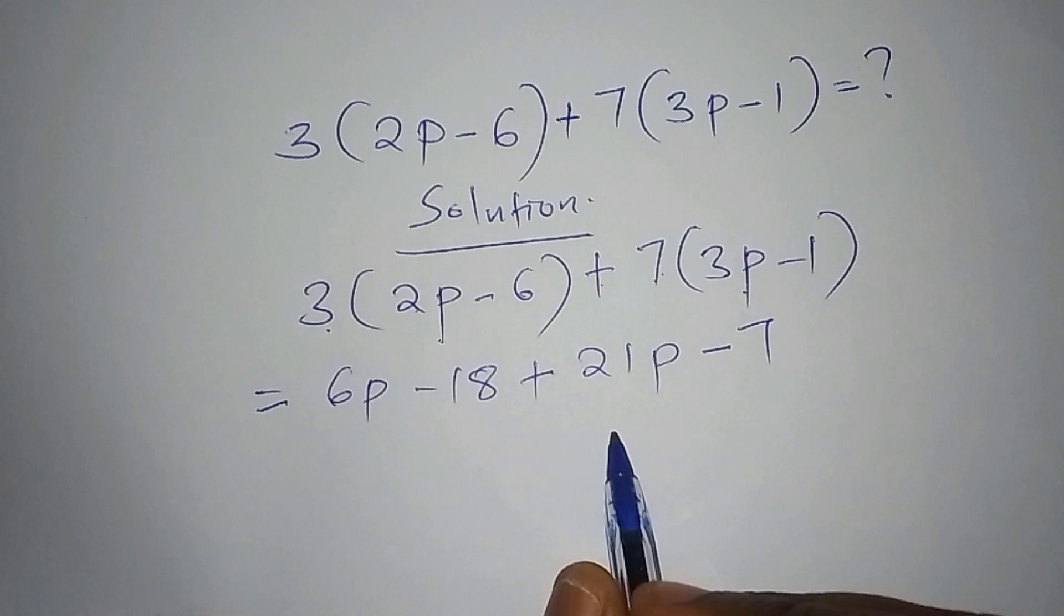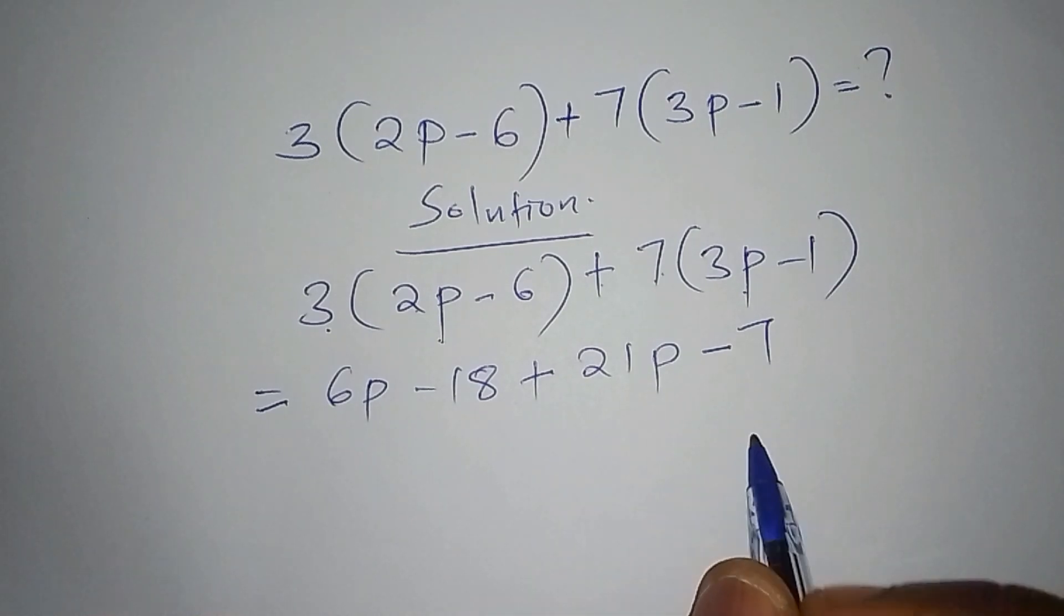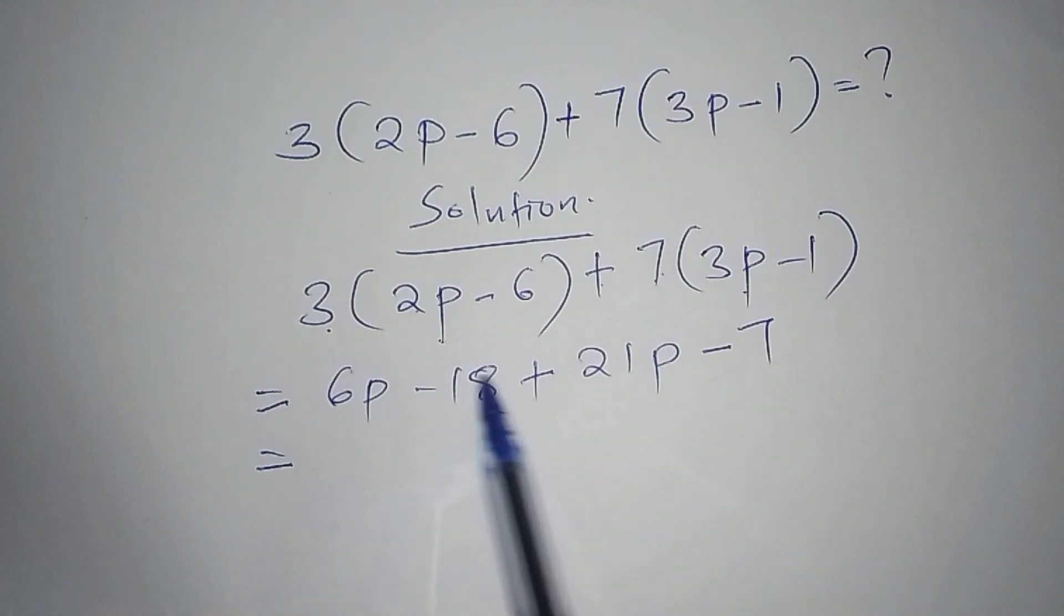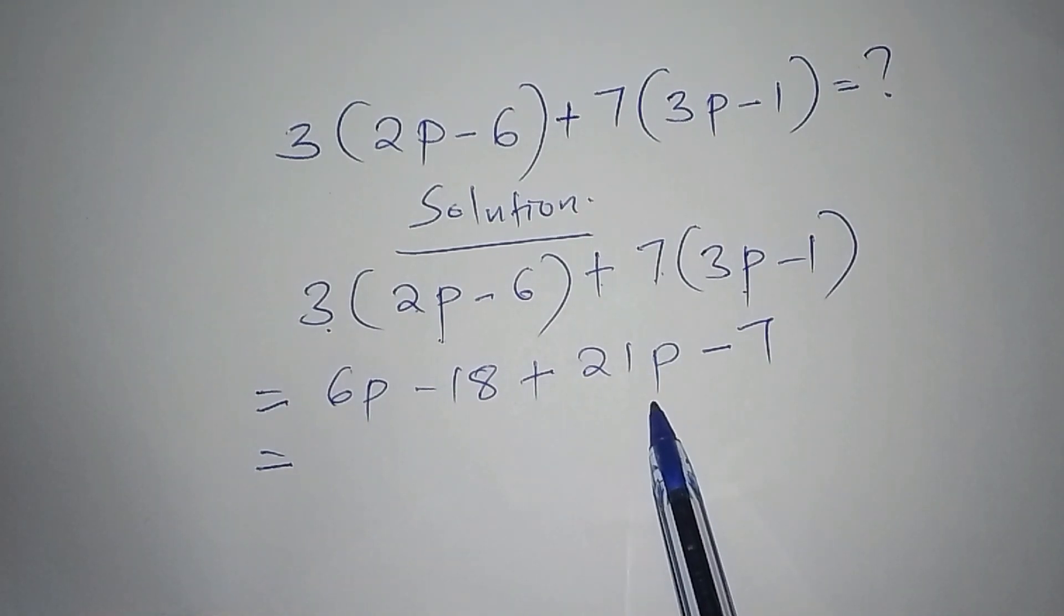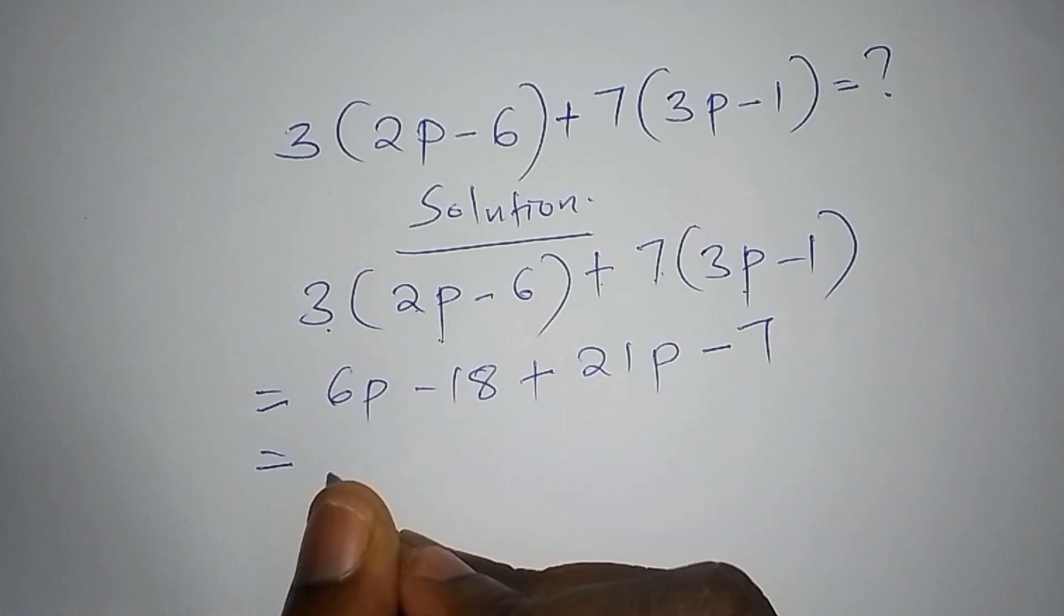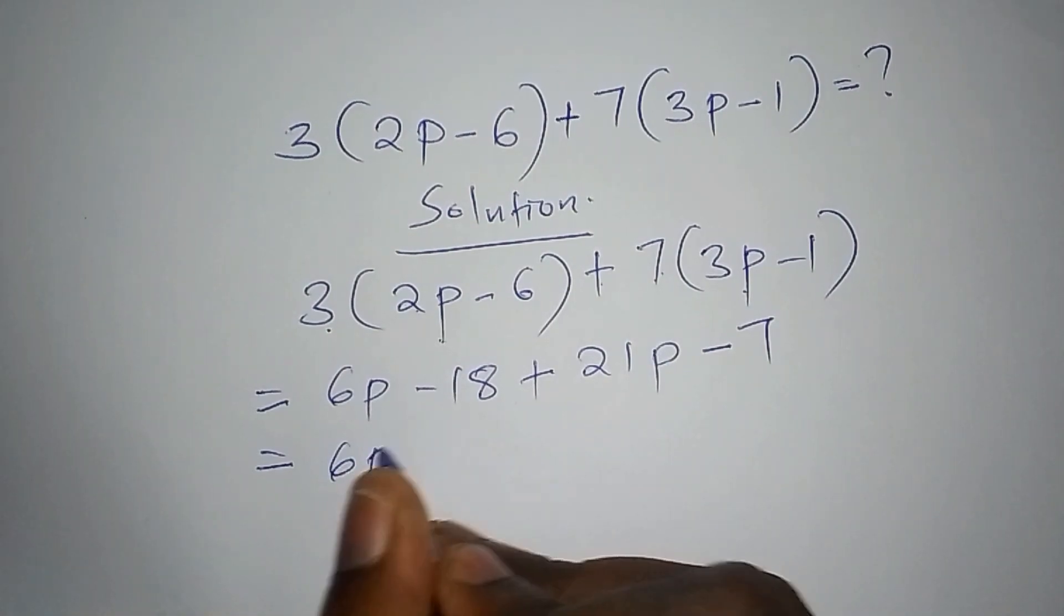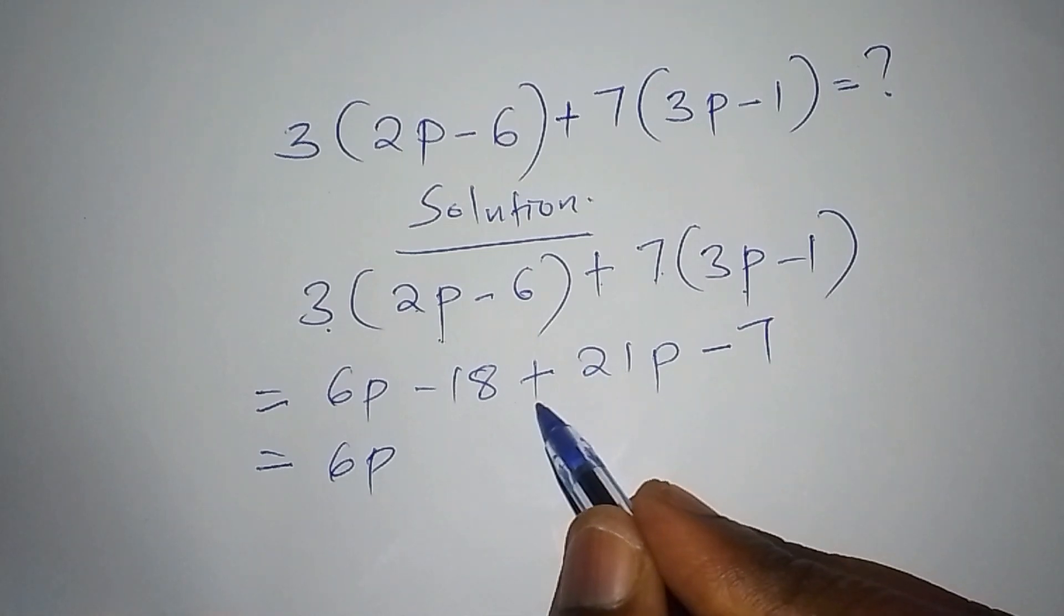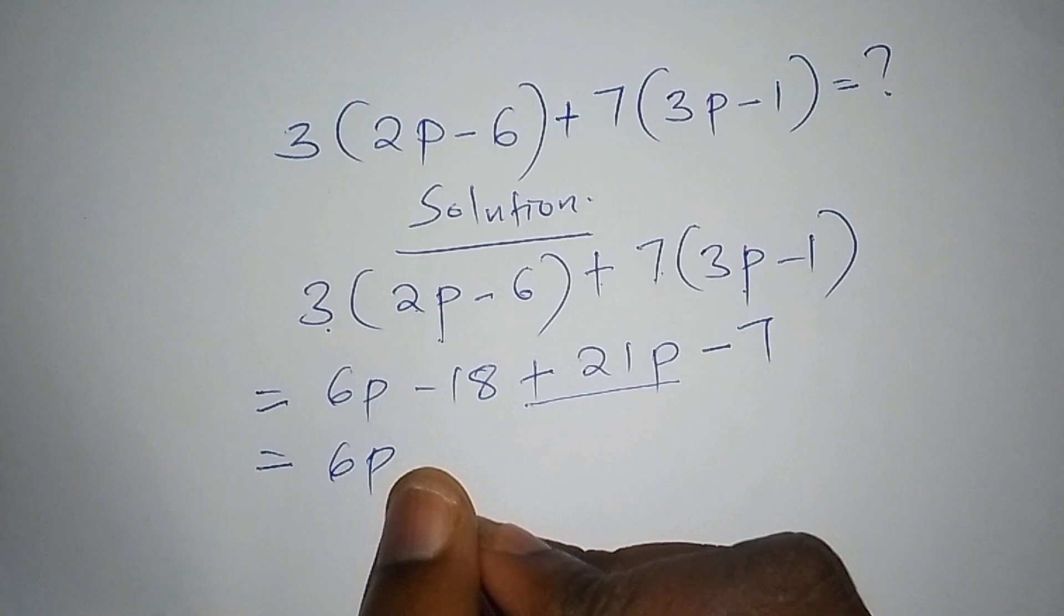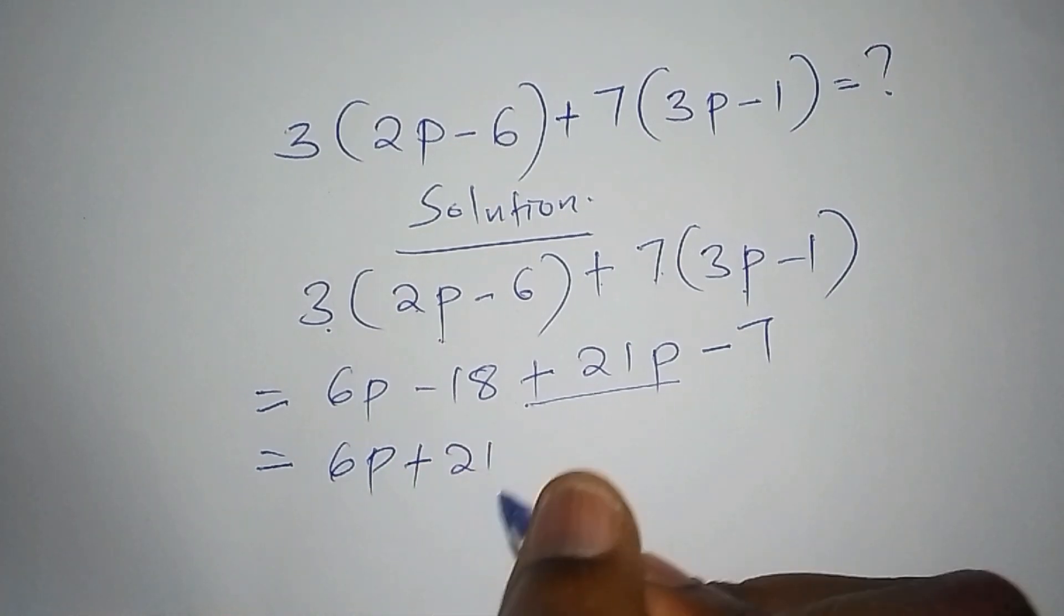That is the other step that we shall focus on. The next step that we're going to do, we are going to have all the known, that is the p and the p together. So that shall now force us to take 6p, then add to 21p, it will carry the sign for addition, add to 21p.